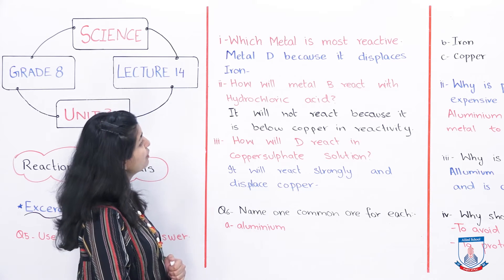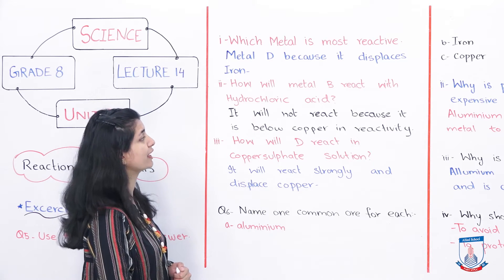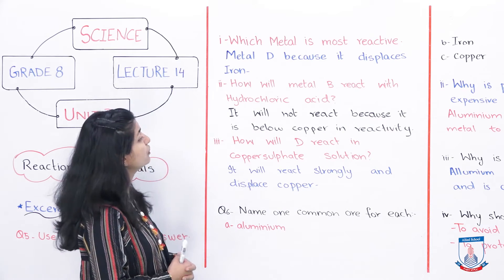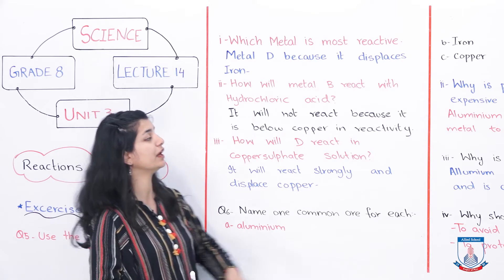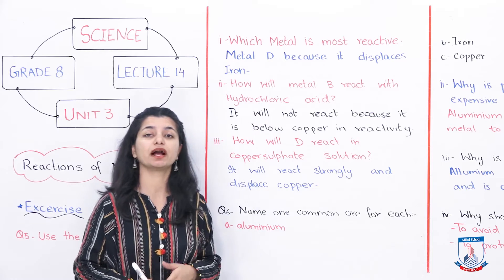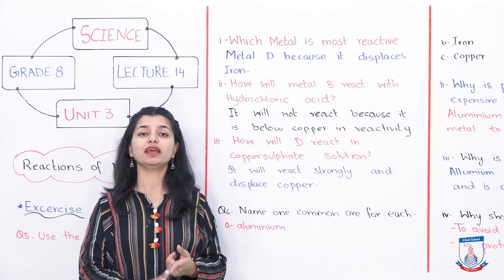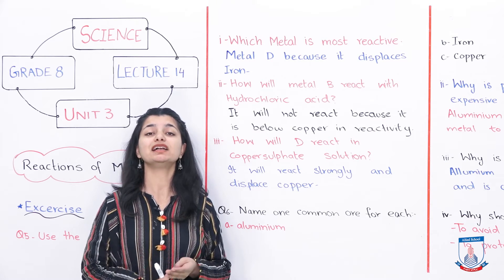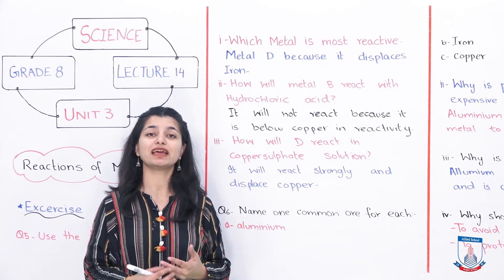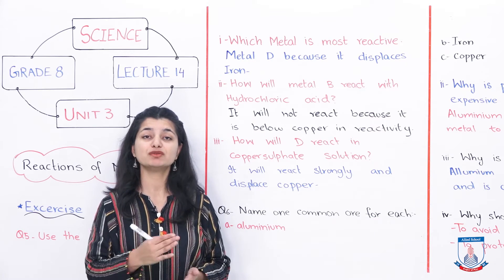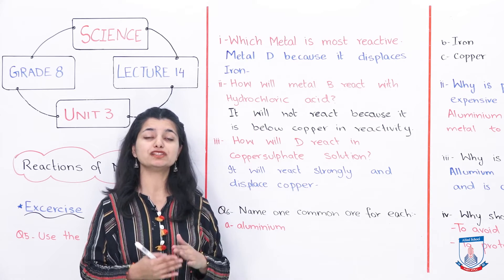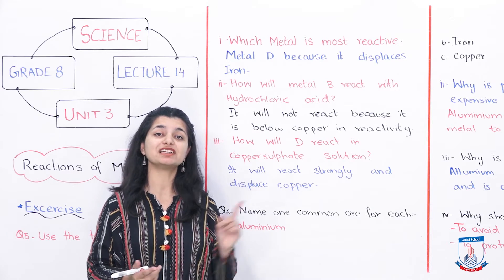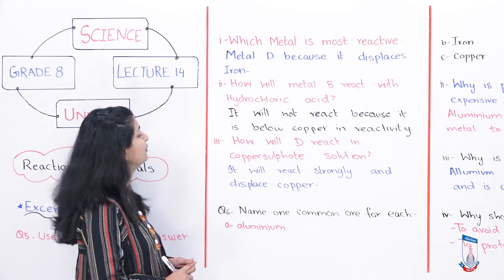The second part asks: how will metal B react with hydrochloric acid? It will not react because it is below copper in reactivity. If you look at the table, metal B shows no reaction with iron sulfate or copper sulfate, but it does displace silver nitrate. This means it is above silver but below copper. According to page 34, metals below copper will not show any reaction with acids. That is why metal B will not react with hydrochloric acid.